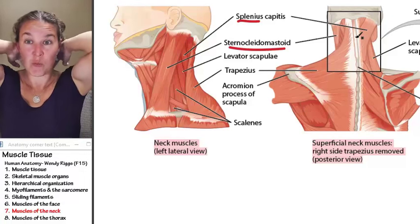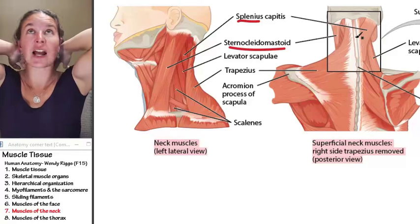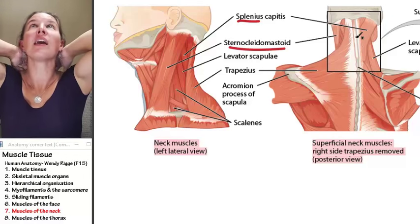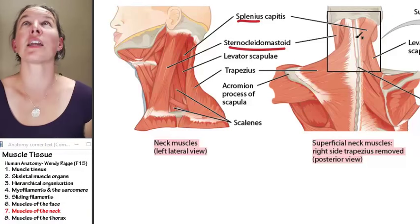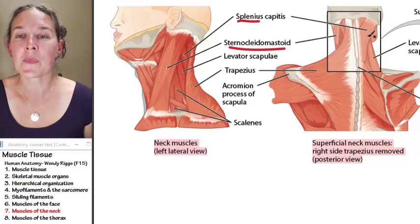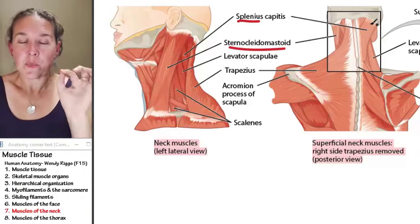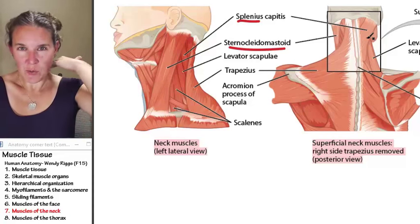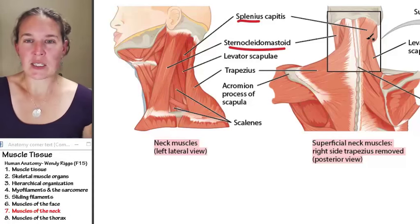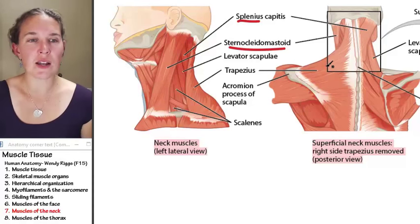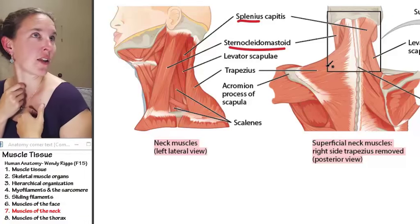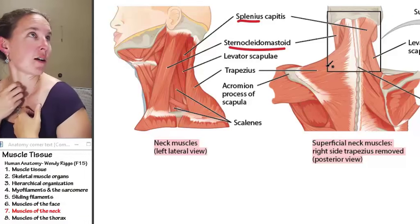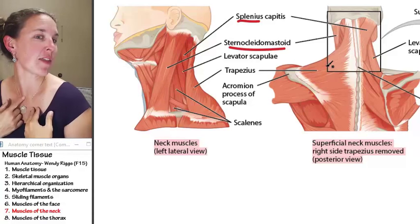For example, if both splenii contract at the same time, you're going to end up moving your head looking upward. Splenius you can see from the posterior aspect of the neck. Let's look at sternocleidomastoid — that's this muscle right here, the one that if you turn your head really sharply, you can pop that thing out.